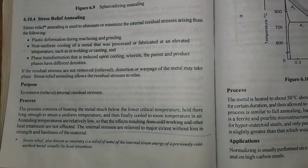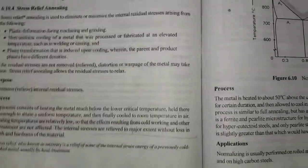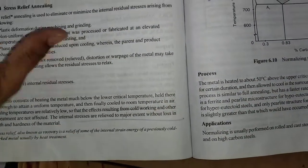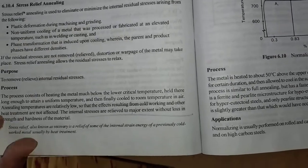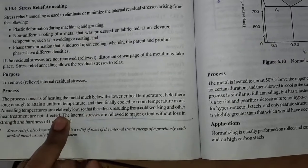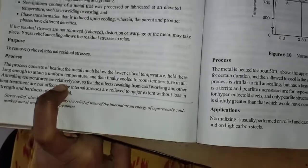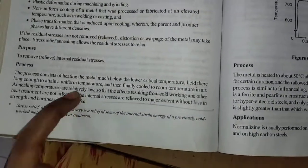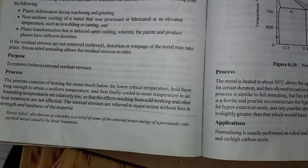You cool it to room temperature, around 25 to 30 degrees Celsius, by air - just allowing it to cool in air. Annealing temperatures are usually low, and we employ slow air cooling in annealing processes.